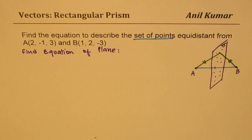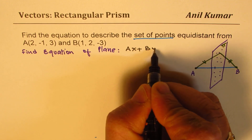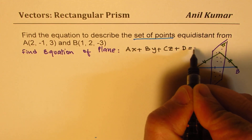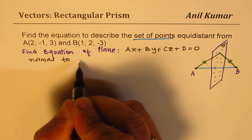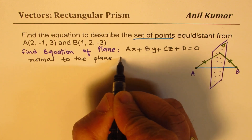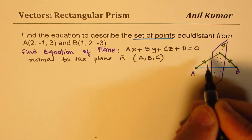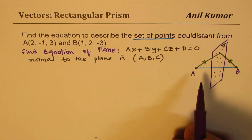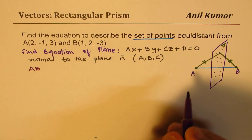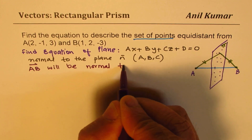To give you some heads up so that I can provide a solution: the equation of a plane can be written as AX + BY + CZ + D = 0. That is the equation of the plane where the normal to the plane is N, given by the vector direction A, B, C. Now in this particular situation, the vector AB happens to be normal to the plane.